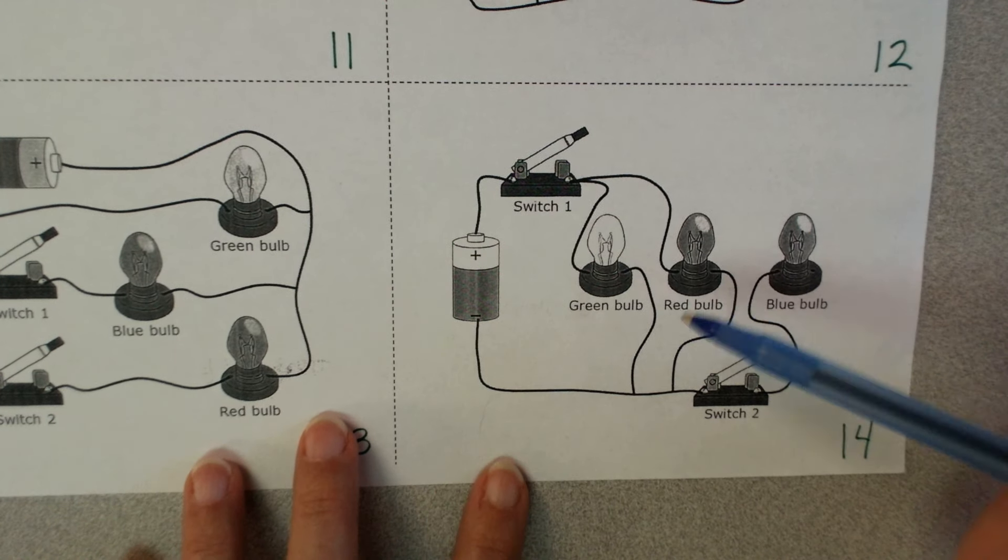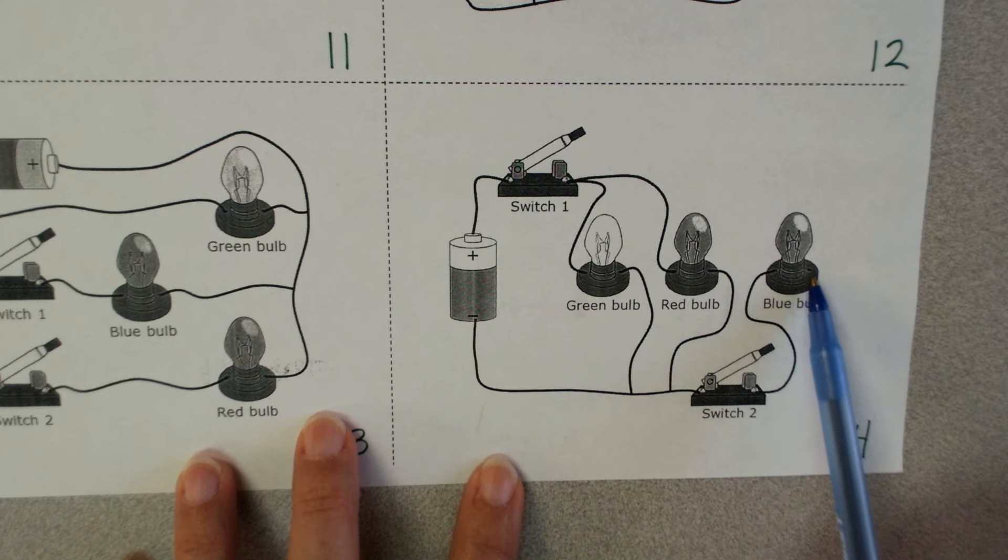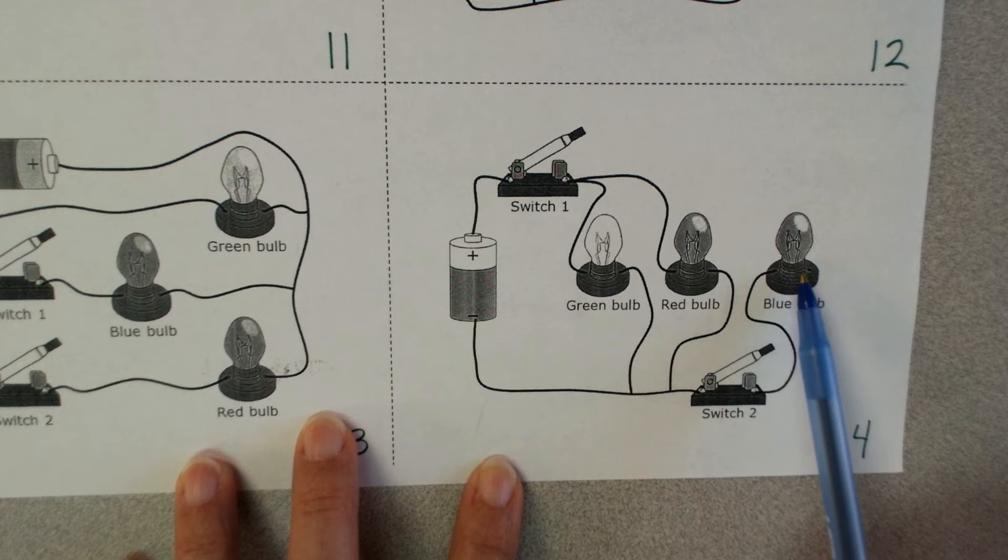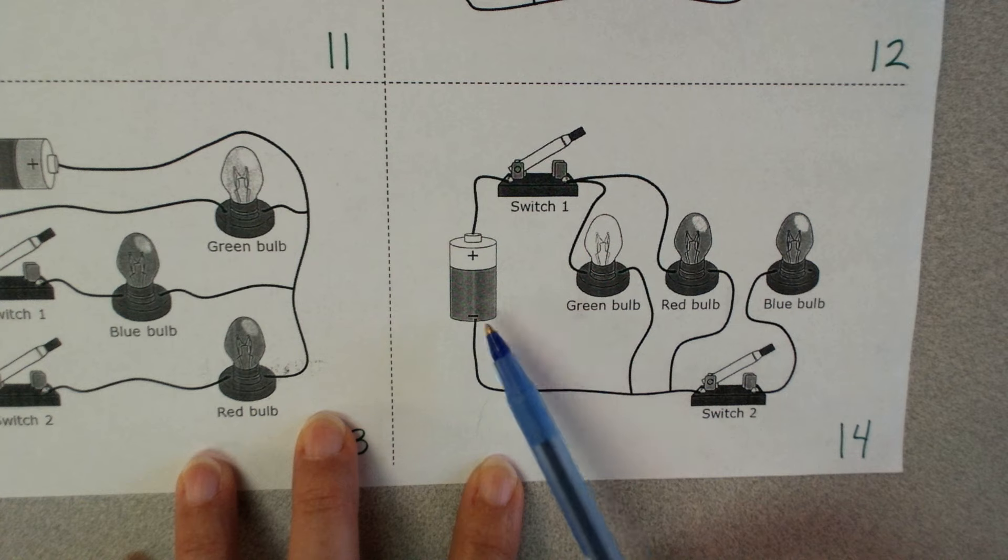This one is also parallel, just set up a little different. The first thing I noticed about this one is this bulb does not have a wire on the other side. If your bulb does not have a wire over on the other side, it's not going to work. Never, ever, ever. I don't care if you close the switch, it's never going to work because it is not part of a complete circuit. So right now, neither one of these bulbs work because the switch is open.